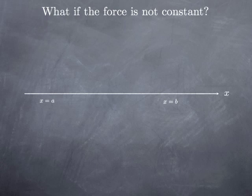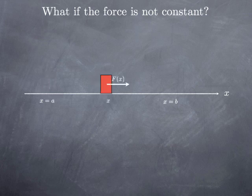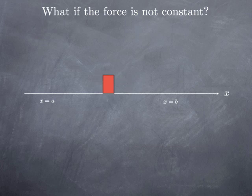Now what if the force is not constant? We are going to keep the situation where we move something along a straight line, from x equal a to x equal b. But now at a given position x, the magnitude of the force is some function F(x). In other words, the magnitude of the force is not the same at each point.